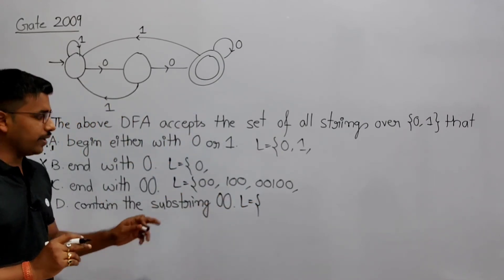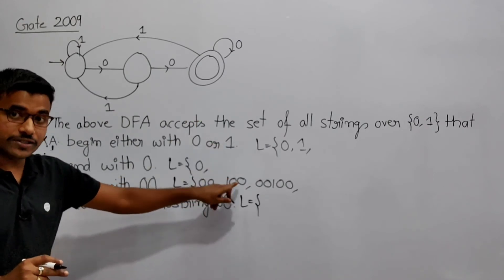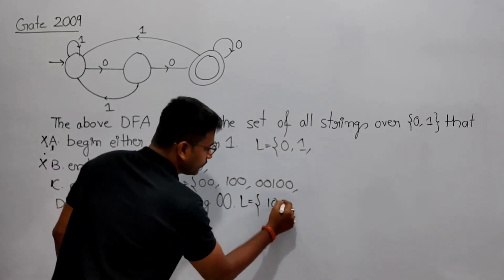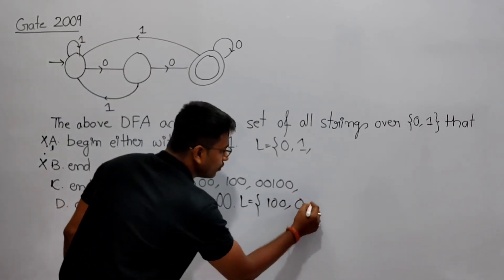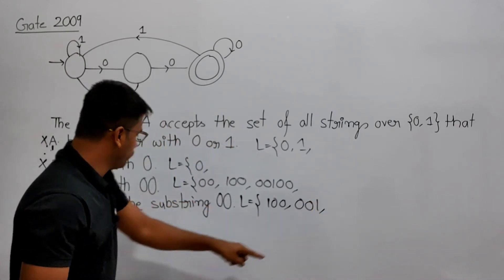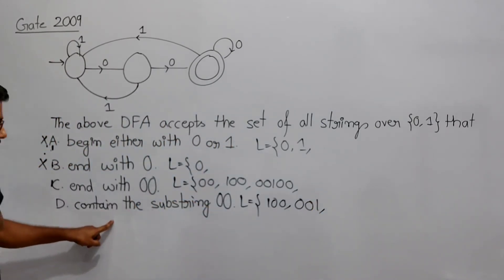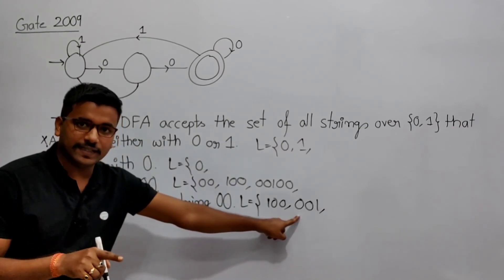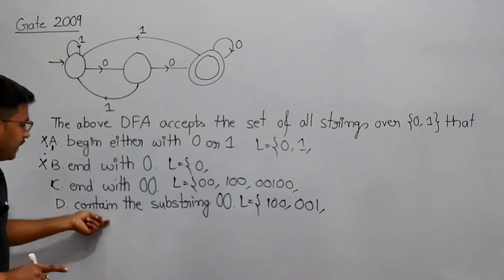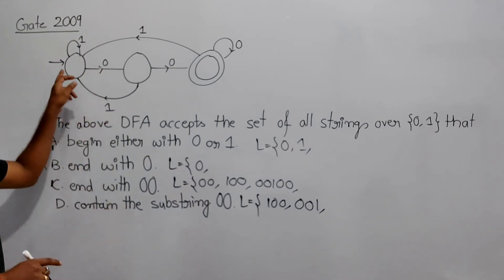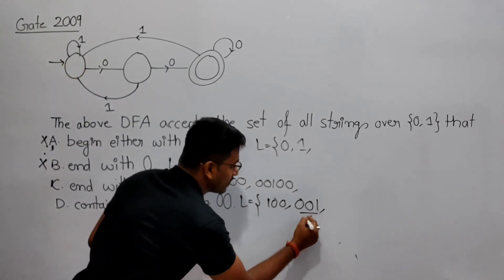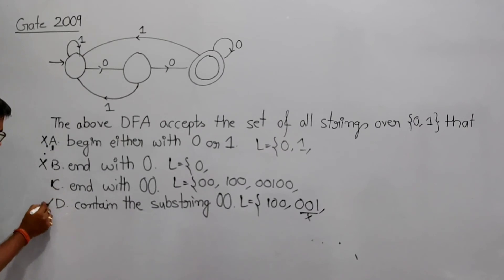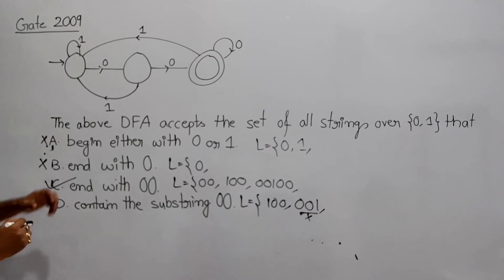Option D says the language contains strings having '00' as a substring. Now '100' contains '00' as a substring and gets accepted, and '001' also contains '00' as a substring. But see '001' — reading '0', '0', '1' — it comes back to the initial state and does not get accepted. So the DFA does not accept '001', meaning option D is incorrect.